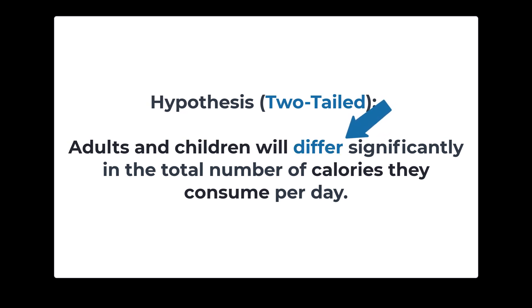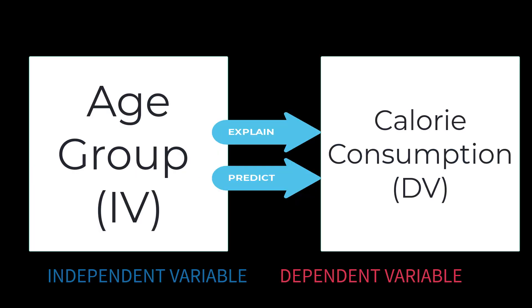This is a two-tailed hypothesis because of the word differ. This indicates the researcher's belief that the groups will be significantly different, but it doesn't specify which group will be higher or lower. In other words, it could go either way, either of the two ways, so we call it two-tailed. Going back to our diagram, we can see how the independent variable age group explains and predicts the dependent variable consumption of calories per day.